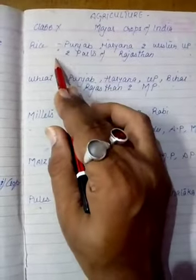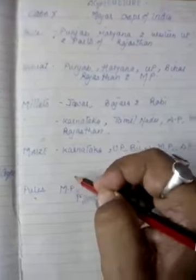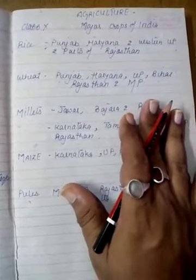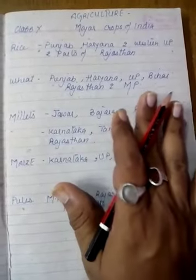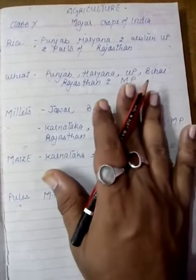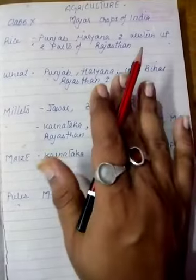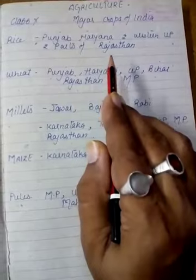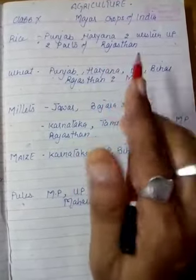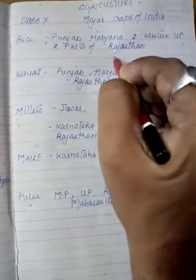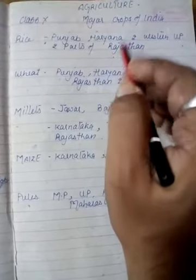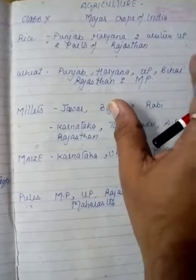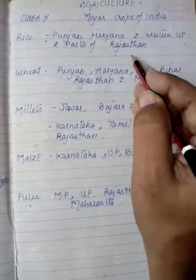The five main crops of India are rice, wheat, millets, maize, and pulses. First, rice — it is the staple food and the majority of Indian people eat this. India is the second largest producer of rice in the world after China. It is a Kharif crop which requires high temperature above 25 degrees and high humidity with annual rainfall of 100 cm.